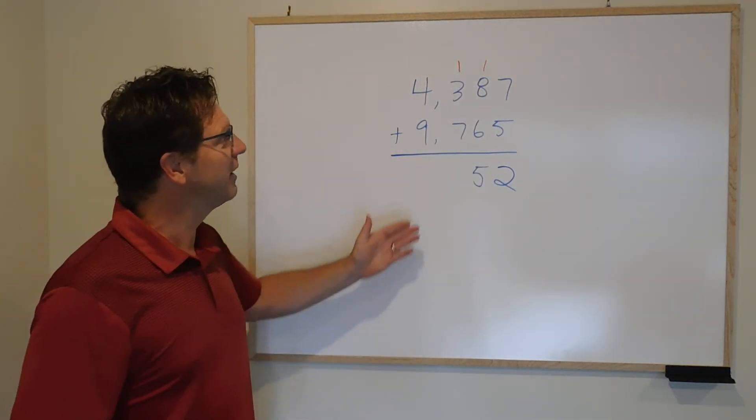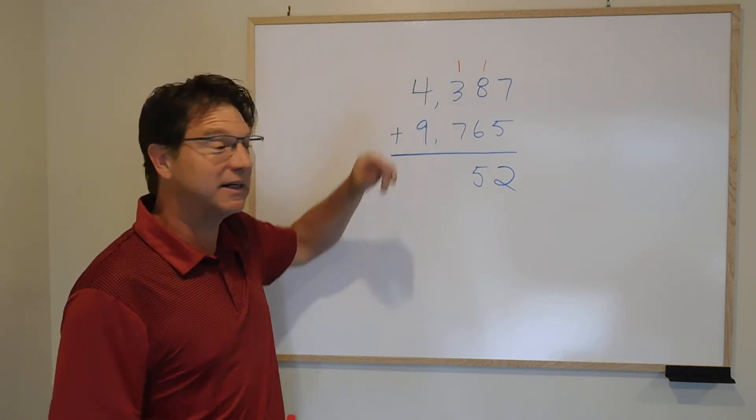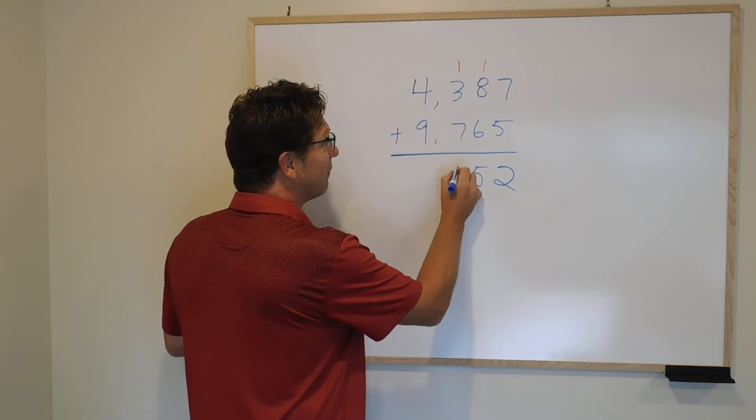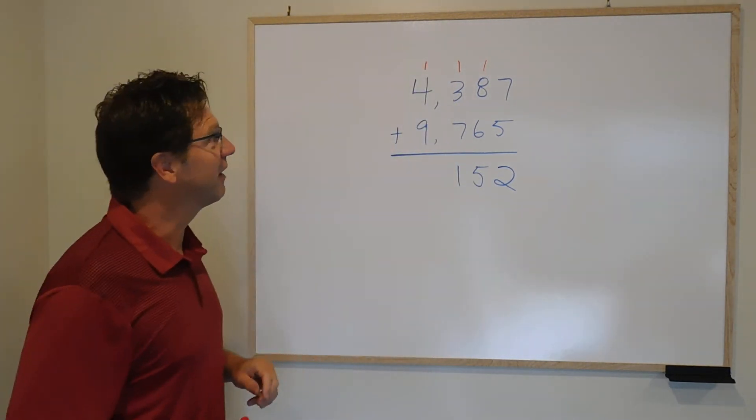And again we repeat 3 plus 7 is 10 plus the 1 is 11 so the 1 from the 11 goes down here. The other 1 from the 11 goes up there.